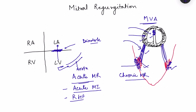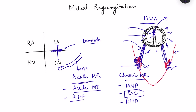Causes of chronic mitral regurgitation include mitral valve prolapse and dilated cardiomyopathy. In dilated cardiomyopathy, the ventricles dilate, causing stretching of the annulus ring along with the myocardium, increasing the space between the mitral leaflets. Rheumatic heart disease is another cause, and infective endocarditis and HOCM can also cause mitral regurgitation.